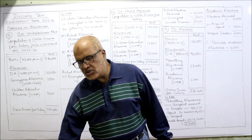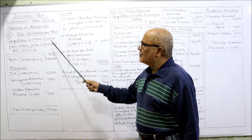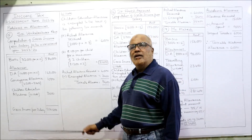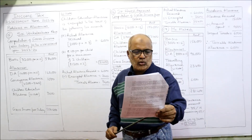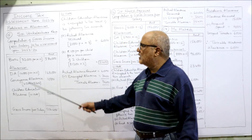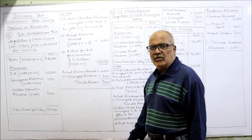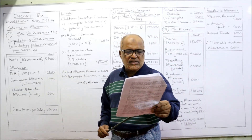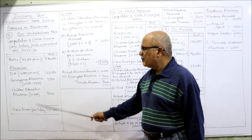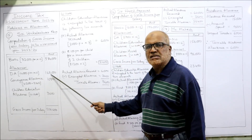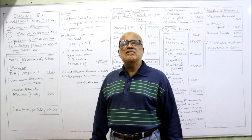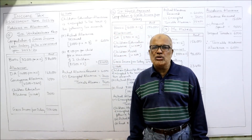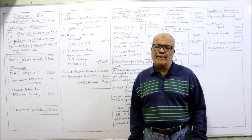Computation of gross income from salary for the assessment year 23-24. First, basic salary: 32,000 per month, so 32,000 into 12 equals 3,84,000. DA (dearness allowance) is 14,000 per month, so 14,000 into 12 equals 1,68,000. Regarding conveyance allowance, the provision of the Income Tax Act is that the unspent amount is taxable.